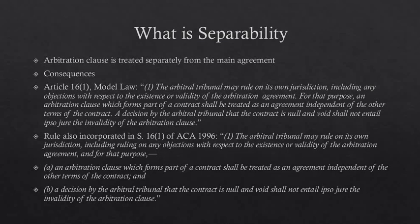Article 16.1 of the UNCITRAL Model Law recognizes this and reads: 'The arbitral tribunal may rule on its own jurisdiction, including any objections with respect to the existence or validity of the arbitration agreement. For that purpose, an arbitration clause which forms part of a contract shall be treated as an agreement independent of the other terms of the contract. A decision by the arbitral tribunal that the contract is null and void shall not entail ipso jure the invalidity of the arbitration clause.'